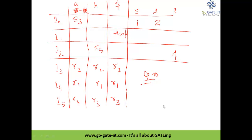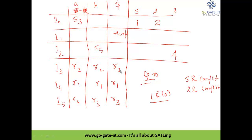This grammar can be called an LR(0) grammar because there are no multiple entries — no shift-reduce conflict and no reduce-reduce conflict. If we had a shift and a reduce operation in the same cell (same row and column), we would call it an SR conflict or RR conflict. We will now consider one more short problem where we will see a conflict occurring.